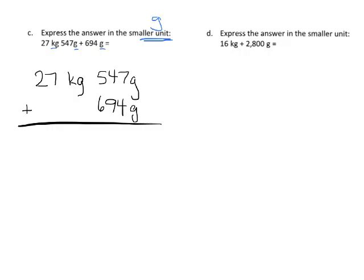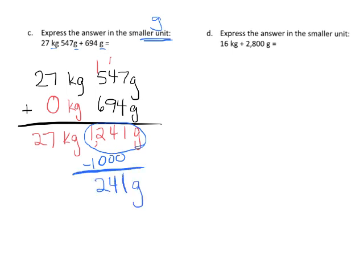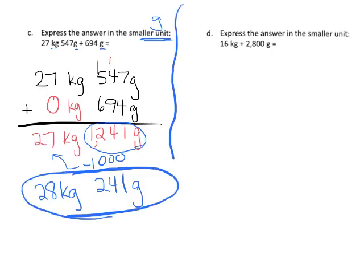So let's add the grams to the grams. So 7 plus 4 is 11, carry the 1. 1 plus 4 plus 9 is 14, carry the 1. 1 plus 5 plus 6 is 12. So we have 1,241 grams. And then we could add the kilograms together. There's nothing down here. So 27 kilograms plus 0 kilograms equals 27 kilograms.